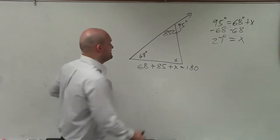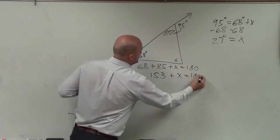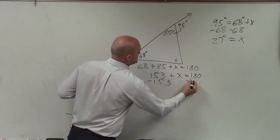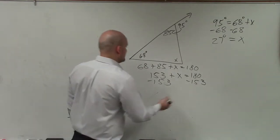So that's going to be 100, 153 plus x equals 180. Subtract 153, subtract 153. And you get 27.